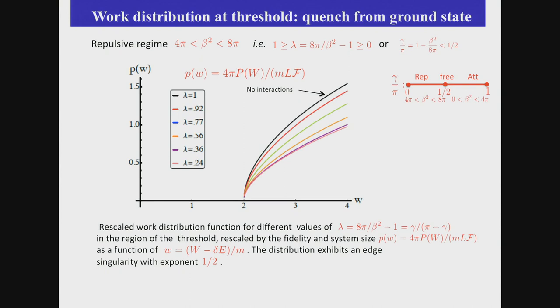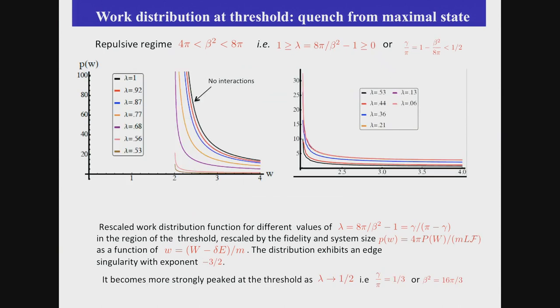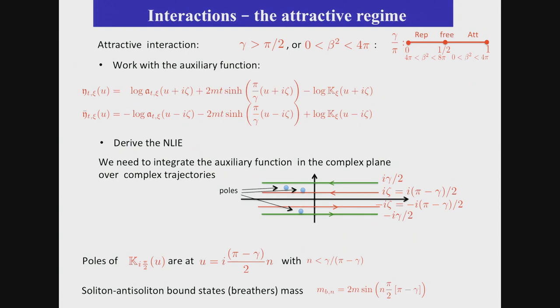And here's what it looks like. Around the threshold, we have this kind of behavior. The black line means no interaction, turning on interaction, you see the effect is to reduce the power. Here you see the excitation, the distribution around the other initial state, where you start from maximal energy.